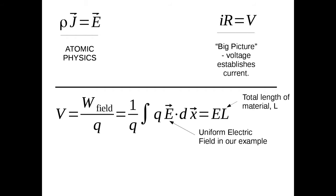Voltage is the integral of force times displacement divided by charge. Since q cancels, we just have the integral of E dot dx. For a uniform electric field over a length L, this integral gives E times L. So voltage equals E times L — a nice, simple equation.